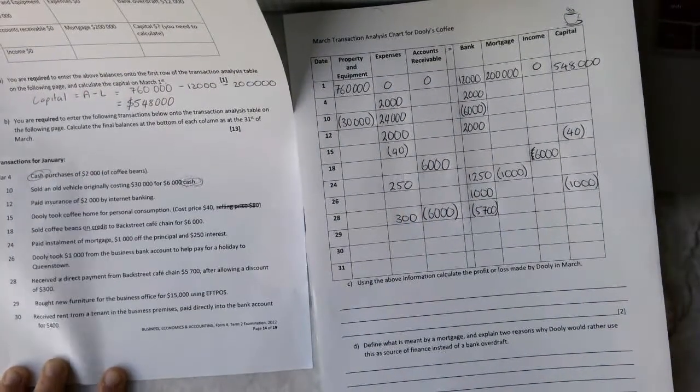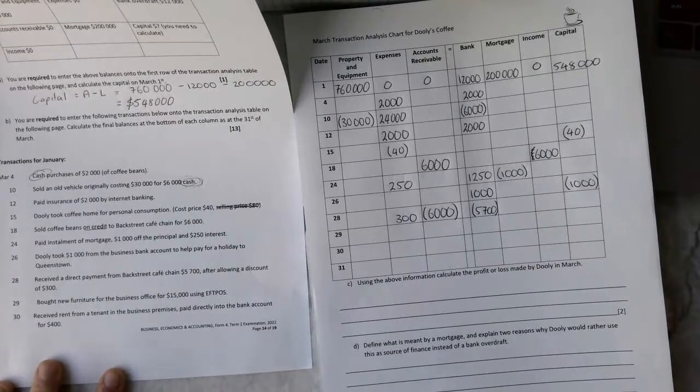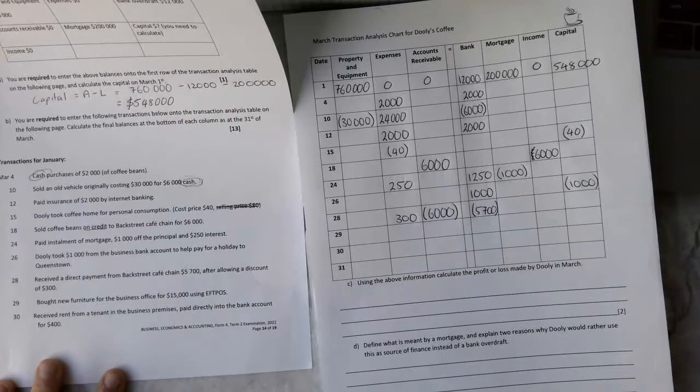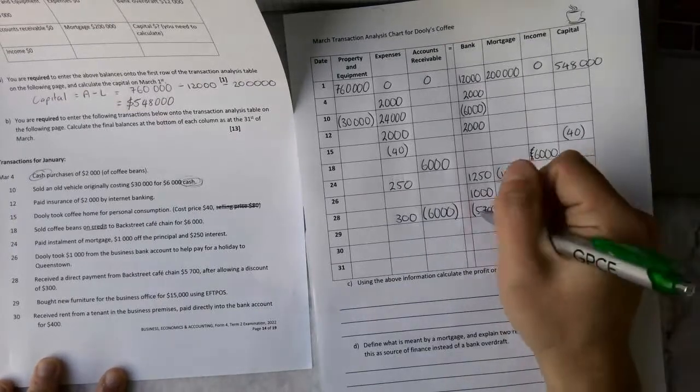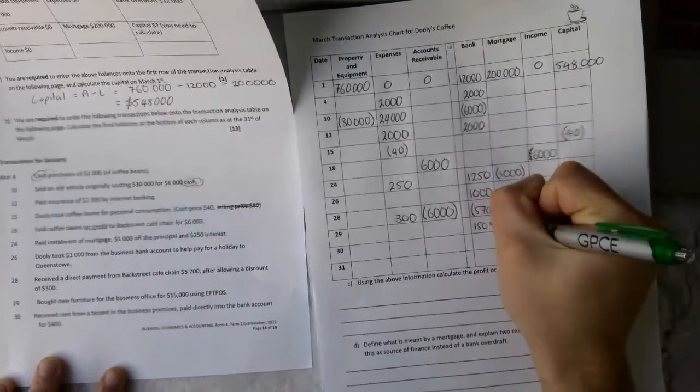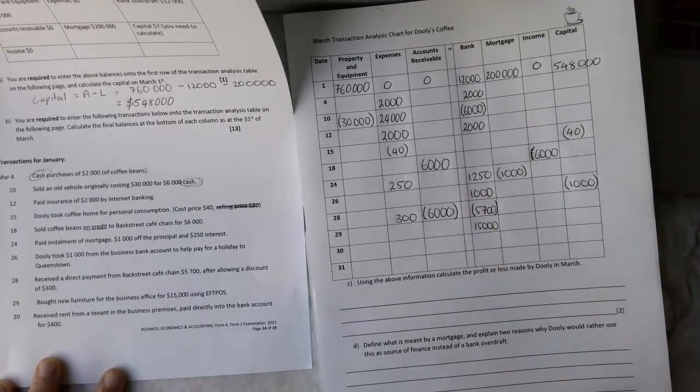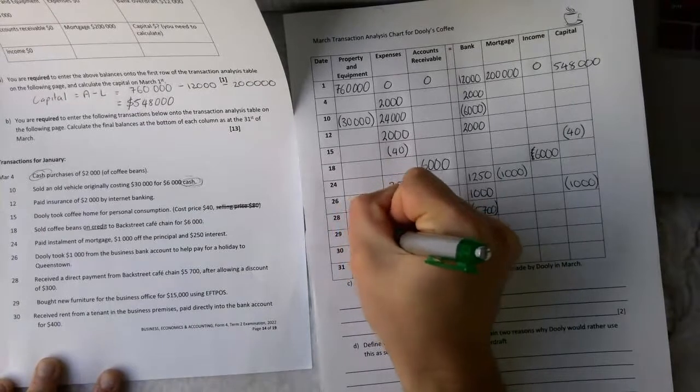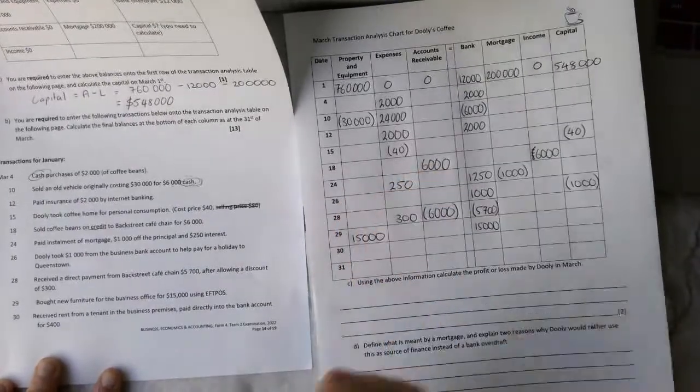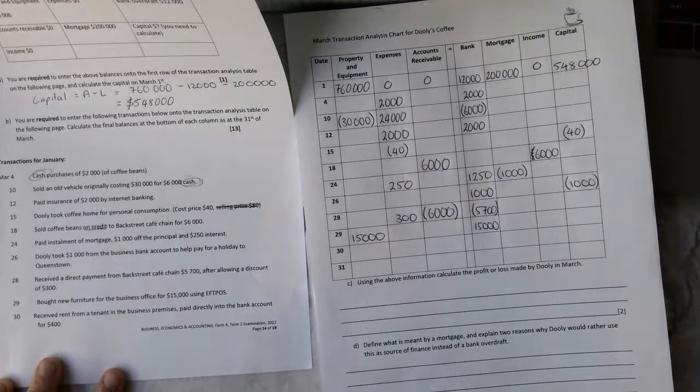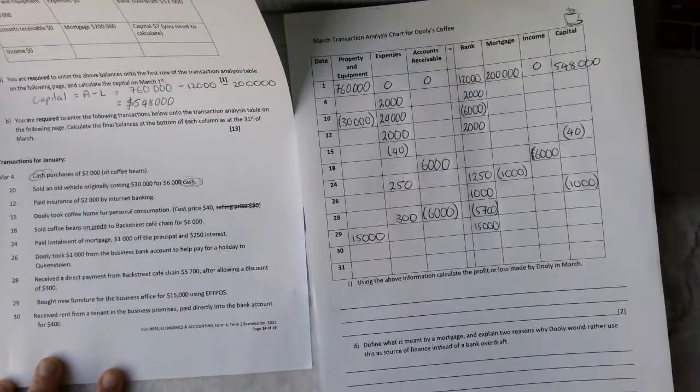We bought new furniture for the business office of $15,000 using EFTPOS. So EFTPOS is an automatic payment. So that's going to be straight away $15,000 out of the bank and $15,000 into property, plant, and equipment, because we've bought something new. So our asset goes up.